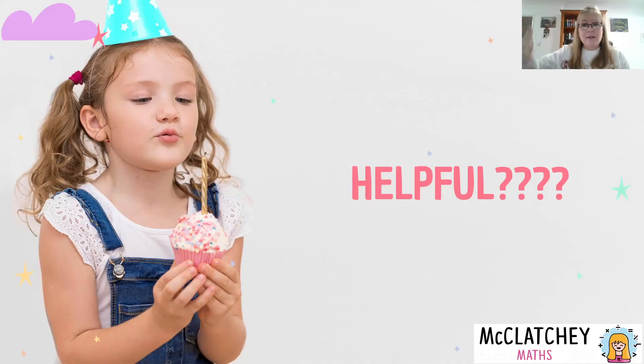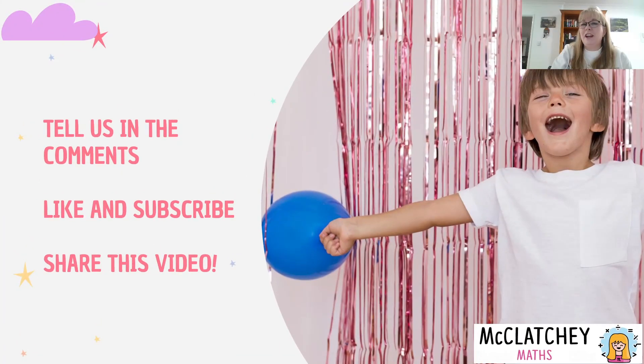Row reduction, column reduction, cover things up, Hungarian algorithm, and then optimal allocation. If you found that helpful, you should share it with somebody. Why not share it with a friend or a teacher or a sibling? Tell us in the comments if you found it helpful. I love your positive feedback, it makes my day. Like and subscribe to the channel so you'll know when video seven's on the way. It's our last one in this whole series.